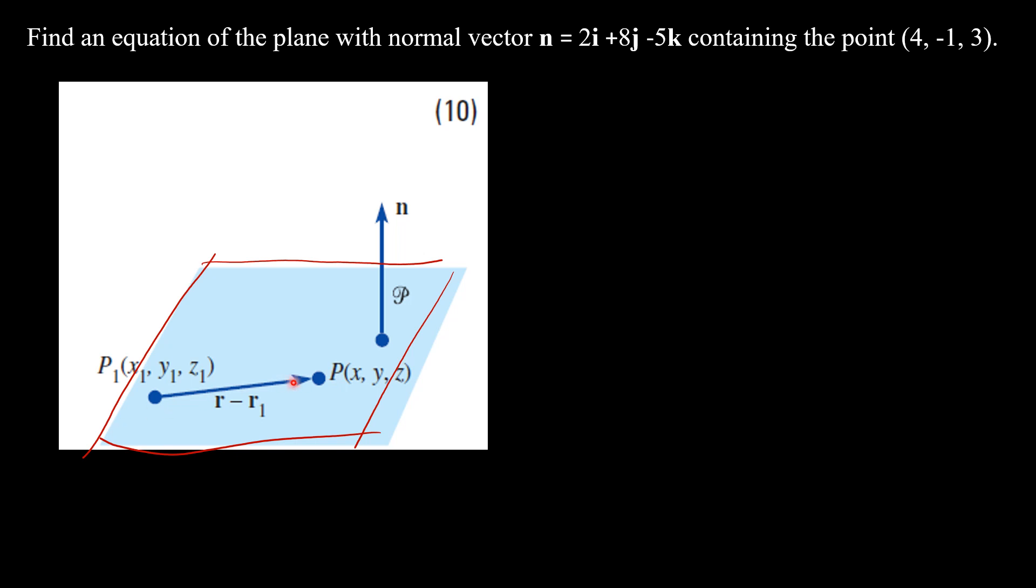And if you find the difference between them, which gives r minus r1, and if you dot product these two vectors, so if you dot product n, the vector n, dot product with r minus r1, this has to give 0.